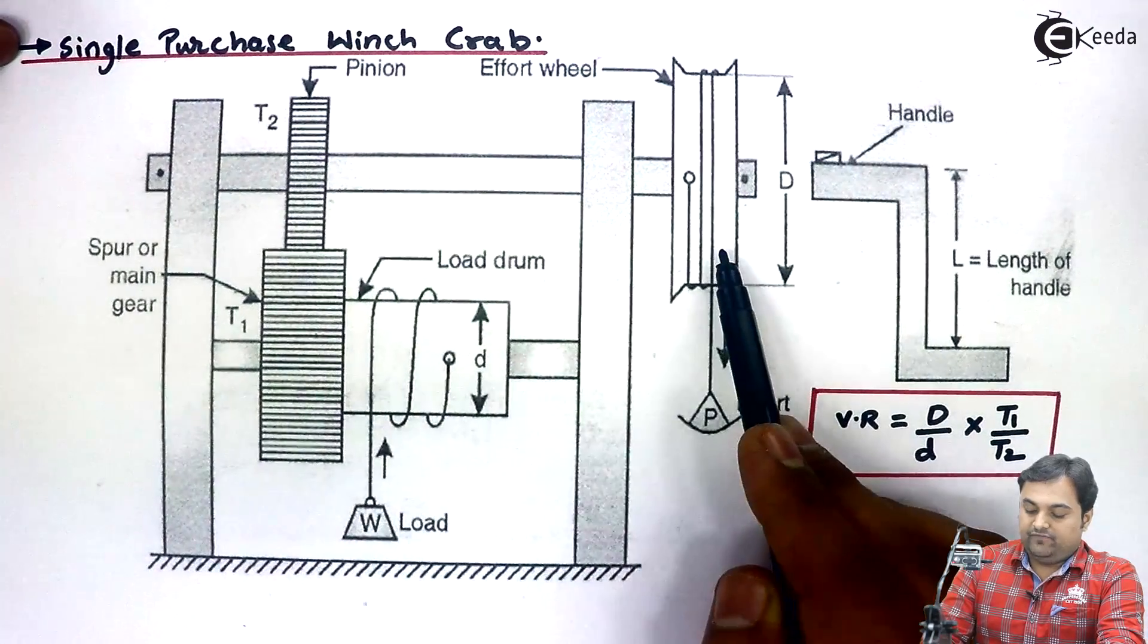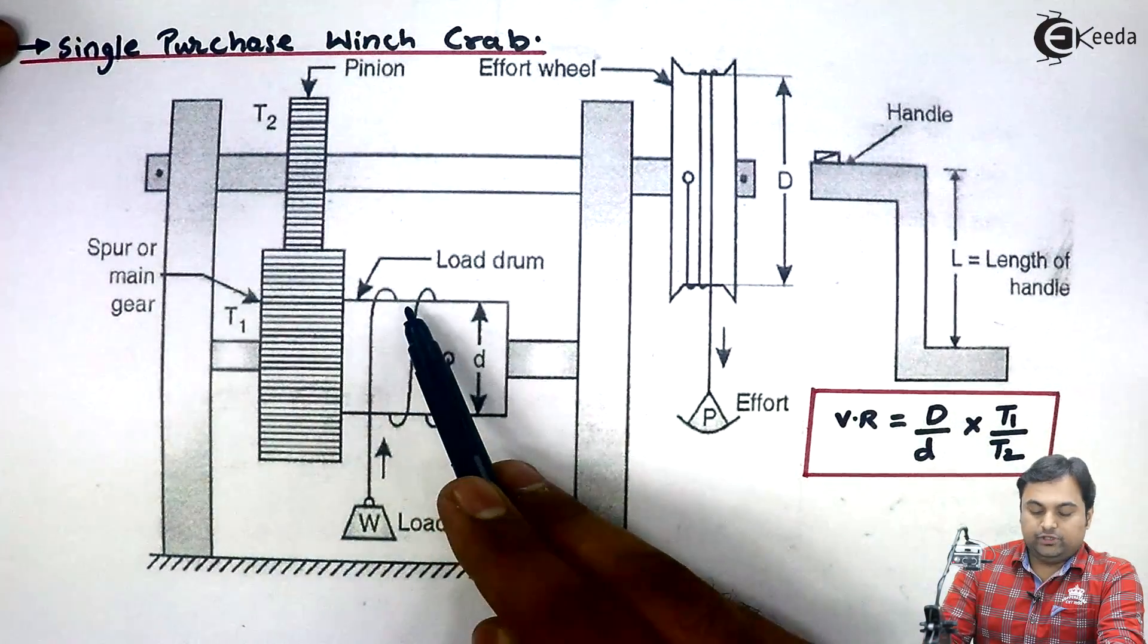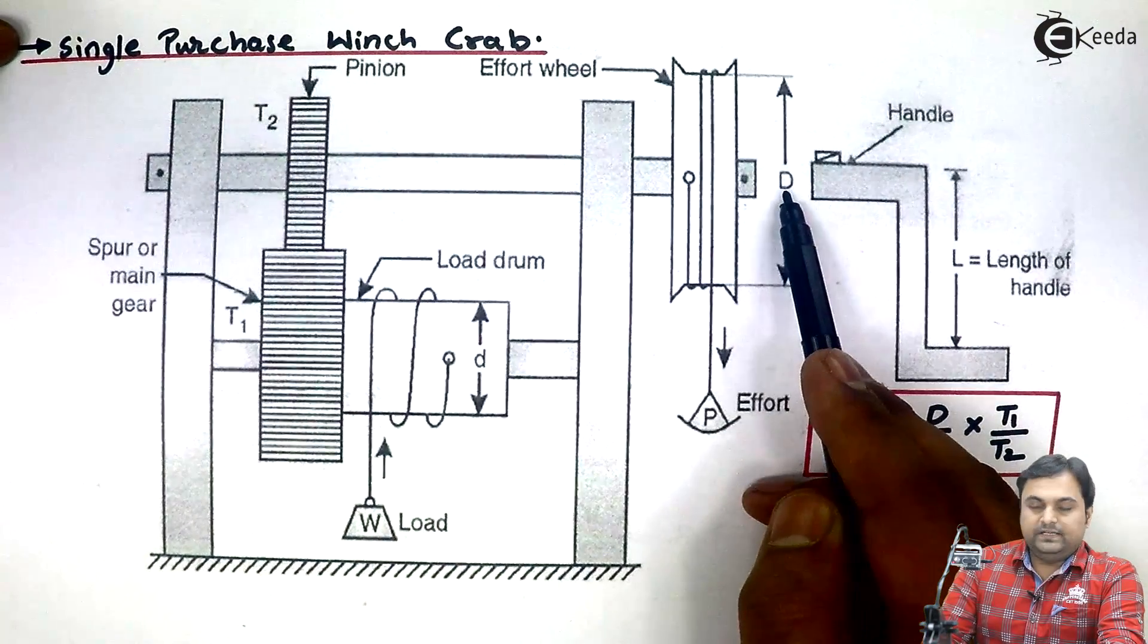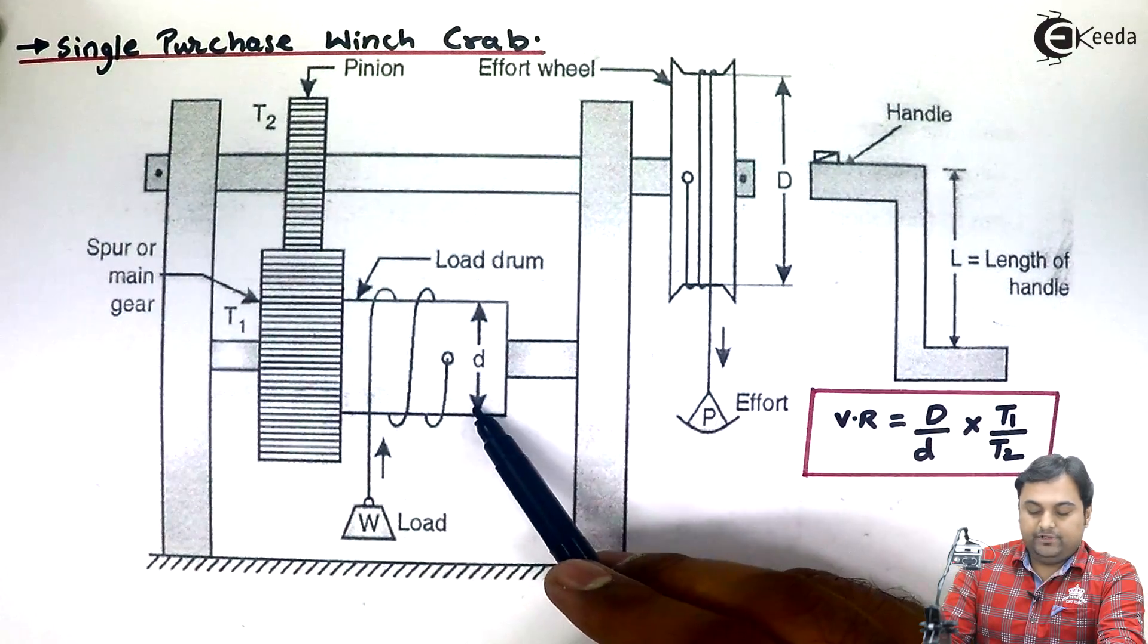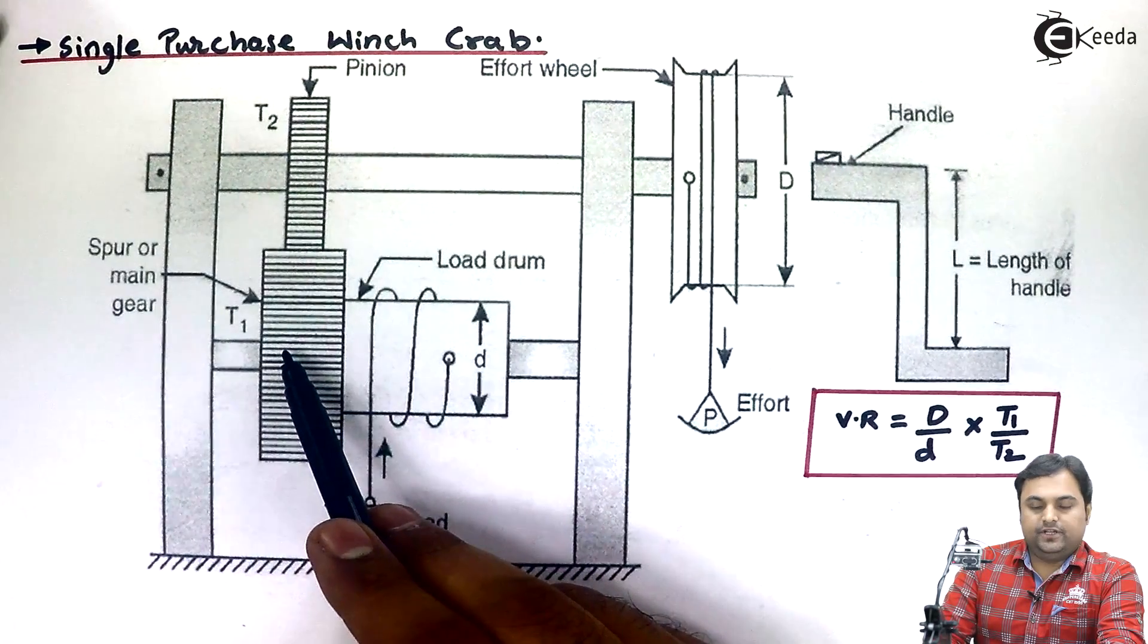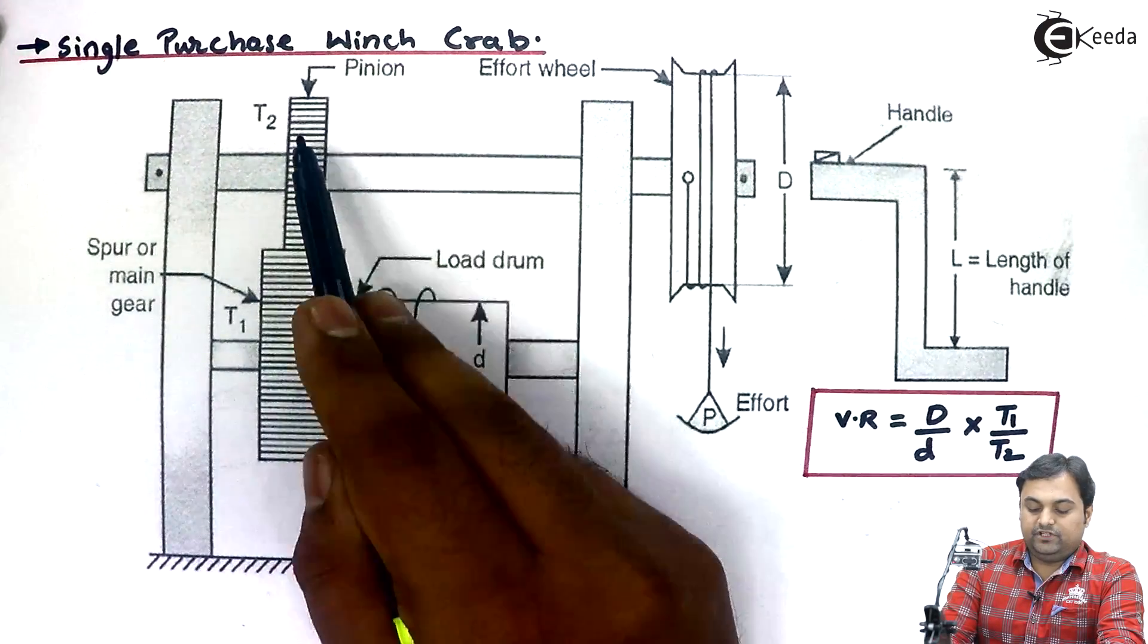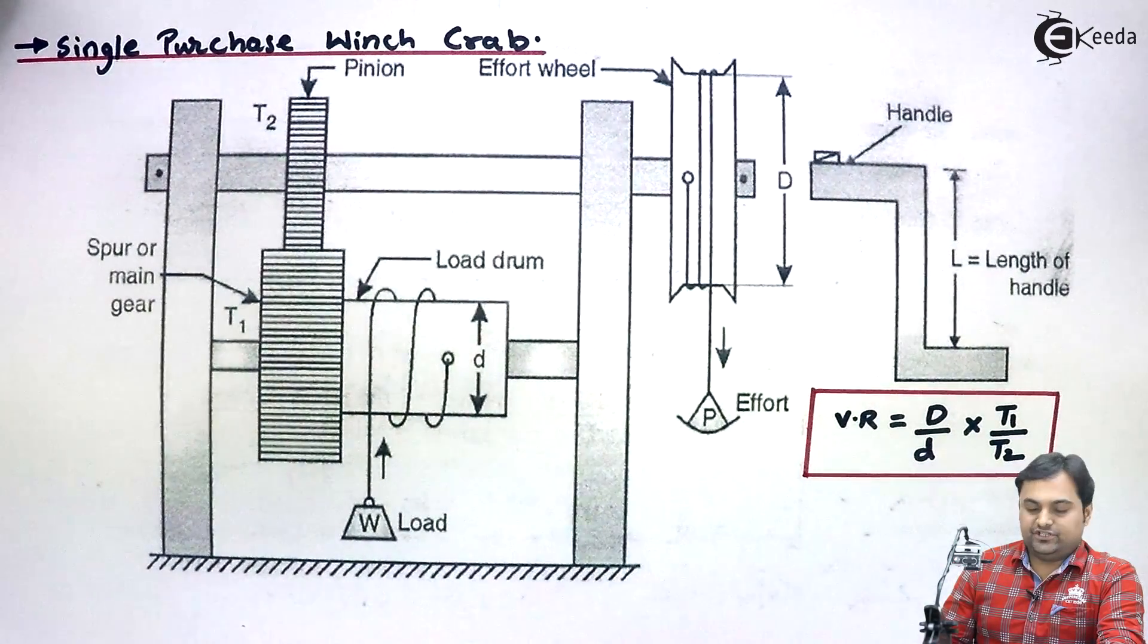Effort would be applied at effort wheel, load would be lifted on the load drum. Capital D is the diameter of effort wheel, small d is the diameter of load drum, T1 is the number of teeth on spur gear, T2 is the number of teeth on pinion. So this was regarding the construction part.